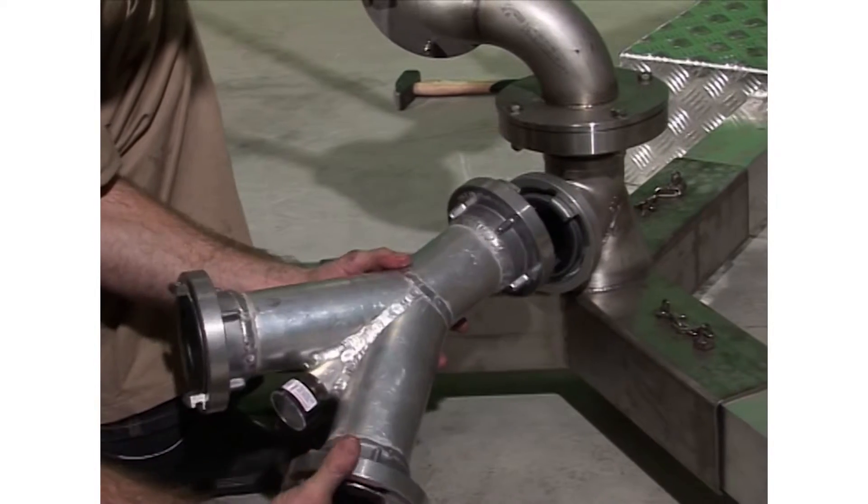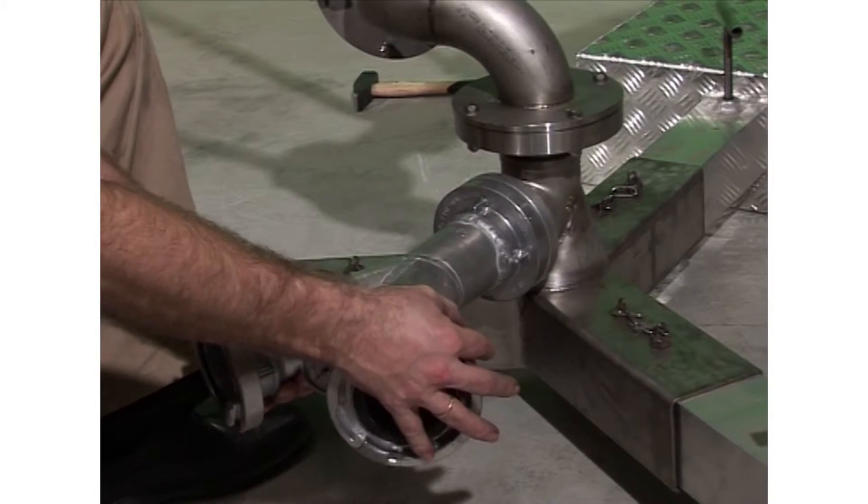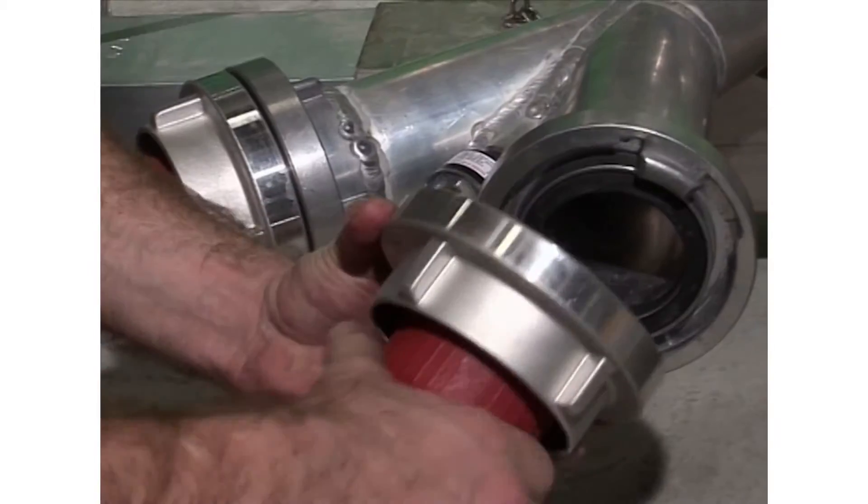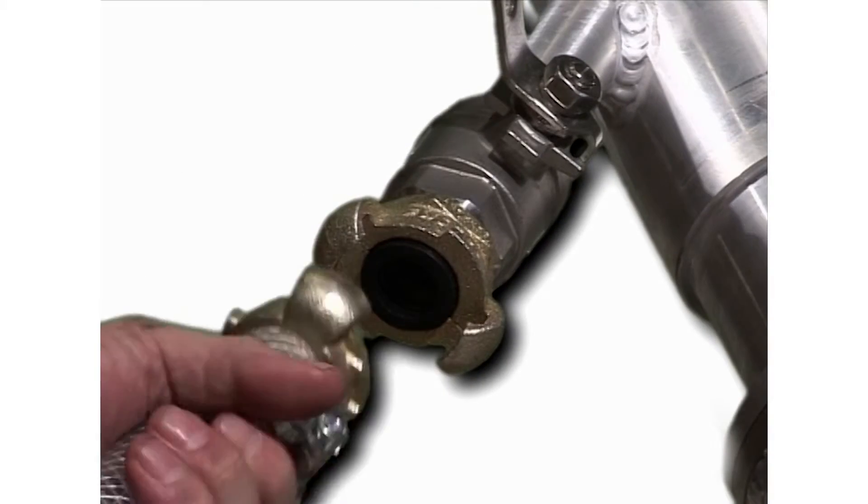Mount the Y-coupling on the water inlet. Connect the water hoses to the Y-coupling. Connect the air hose to the air connection.